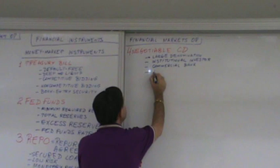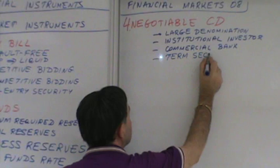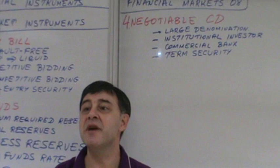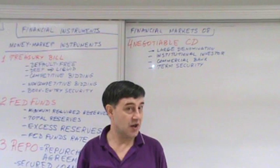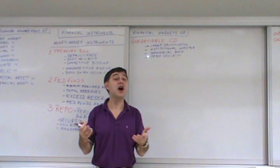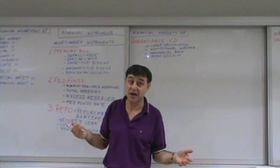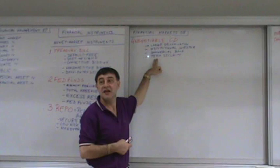The issuer is always a depository institution, but most commonly a commercial bank. The next key characteristic is that it is called a term security. It matures with a particular term.